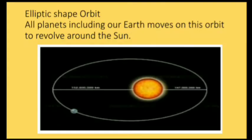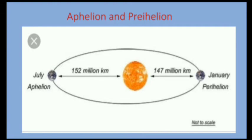All planets, including Earth, move on an elliptic orbit to revolve around the Sun. Aphelion and perihelion are the two positions of the Earth relative to the Sun, and these occur because of the elliptic orbit. The distance between the Earth and the Sun varies from a minimum to a maximum.